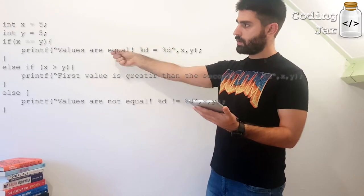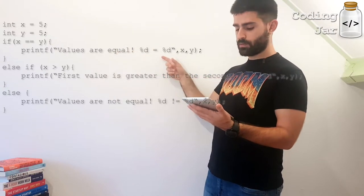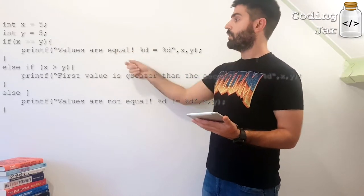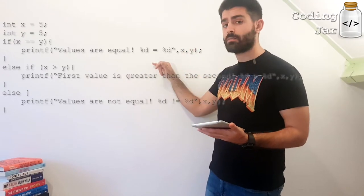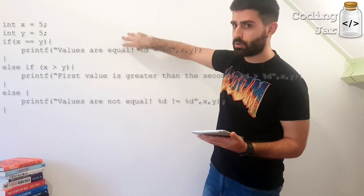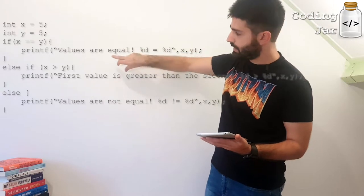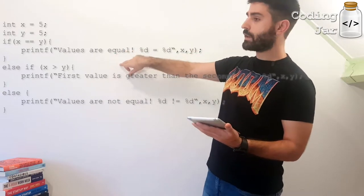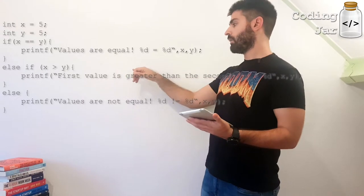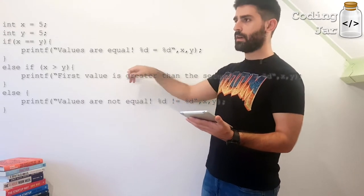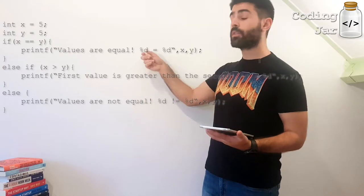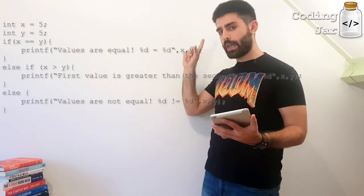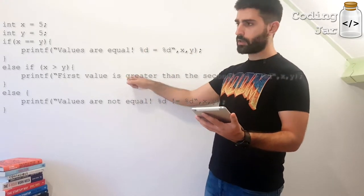If x equals y, then the values are equal. Else if x, so here we define a new statement. If this isn't true, then check the next statement. Else if x greater than y, printf variable, whatever, first variable is greater than the second. Else, if none of the above is true, then values are not equal.